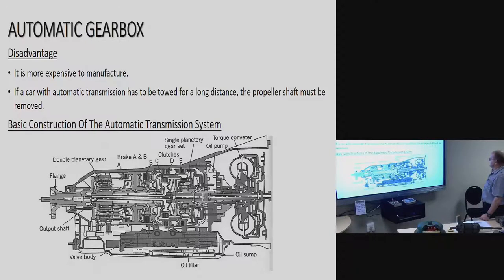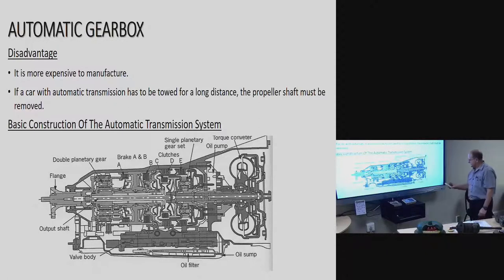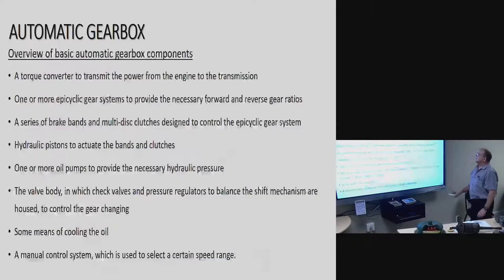Here is the basic construction of the automatic transmission. On the left side is the output shaft. On the right side is essentially the torque converter, then the oil pump. Right at the bottom is your oil sump, with the oil filter inside and your valve body. In the middle you have different double epicyclic gear systems with clutch systems to actuate them.